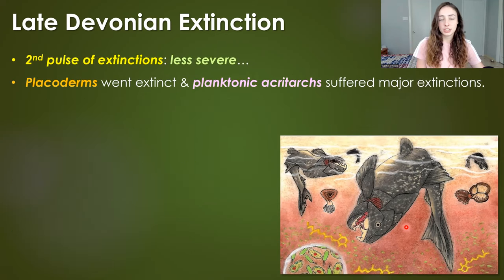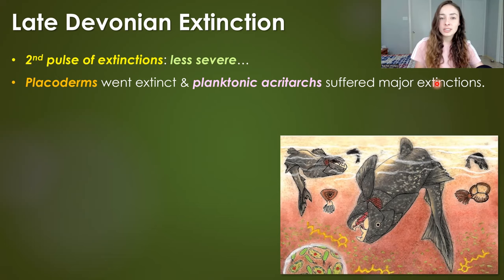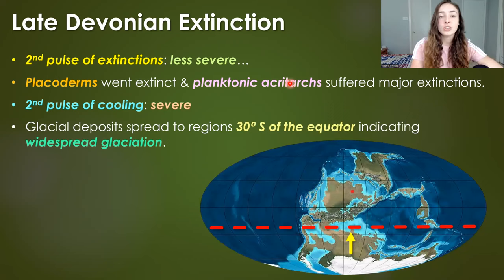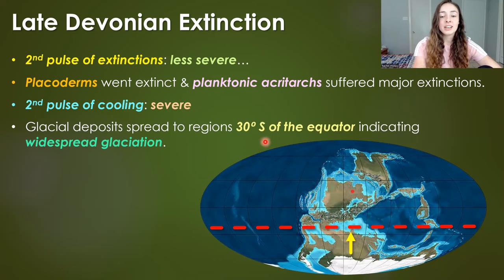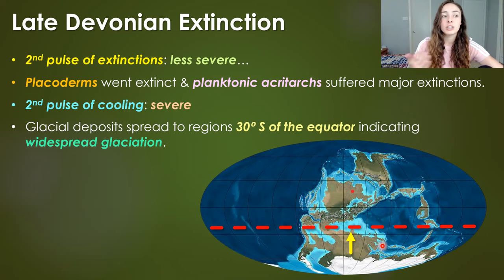The second pulse of extinctions was less severe than the first, but for placoderms it was the end. Placoderms, which dominated the Devonian period, totally went extinct, and planktonic acritarchs suffered major extinctions as well. The second pulse also had an associated cooling event that was really severe — glacial deposits spread to regions that were 30 degrees south of the equator, indicating major cooling and glaciation that would have led to extinctions of many warm-adapted species near the equator.